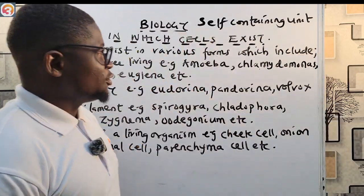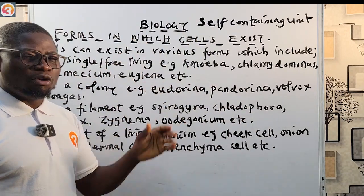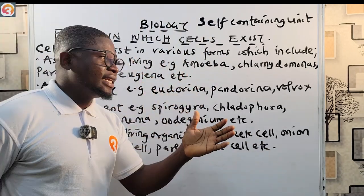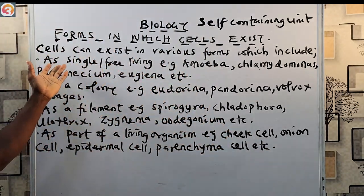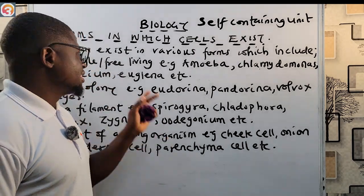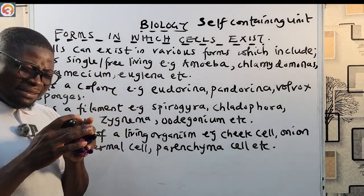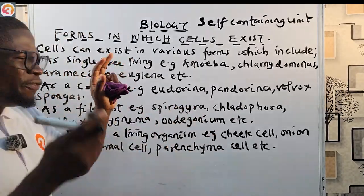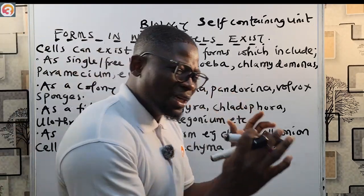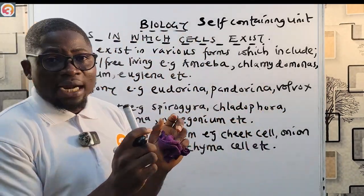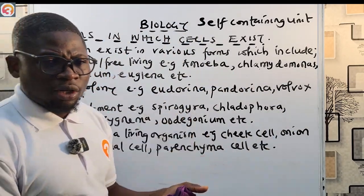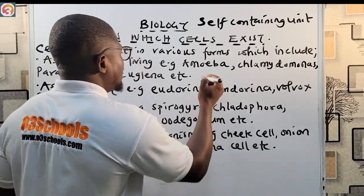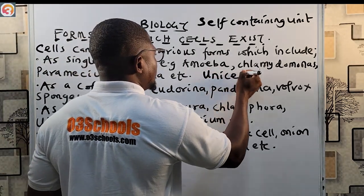Today we're talking about the forms in which cells exist. Cells exist in different forms. The first form is single or free living — also called unicellular. These organisms exist at the basic cell level; they are single, they can stand alone, and they do not need a host to live on.